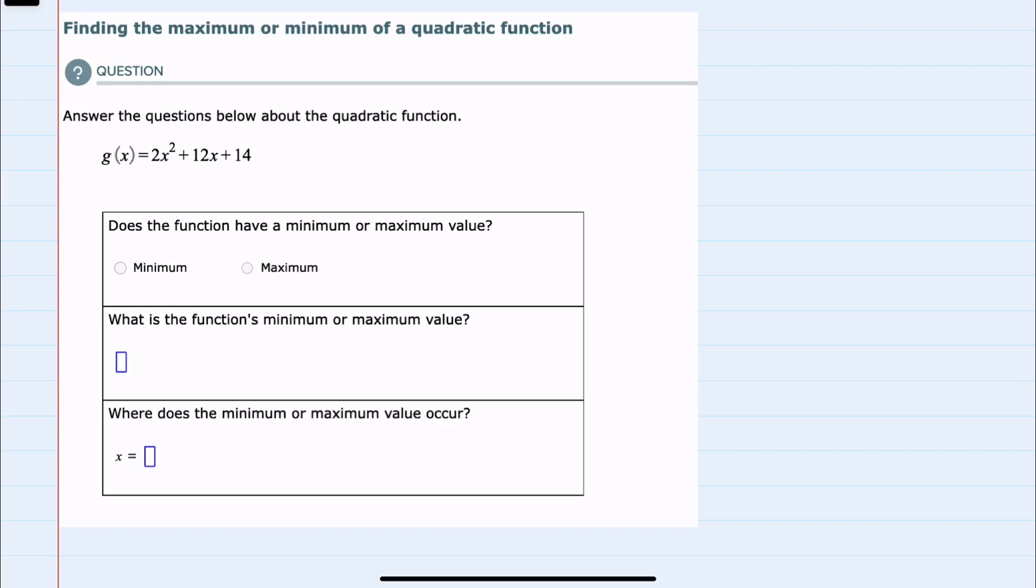In this video I'll be helping you with the ALEKS problem type called finding the maximum or minimum of a quadratic function. We're given the quadratic here, g(x), and asked a few questions about either the minimum or maximum. The first question is to identify whether it has a minimum or maximum value.